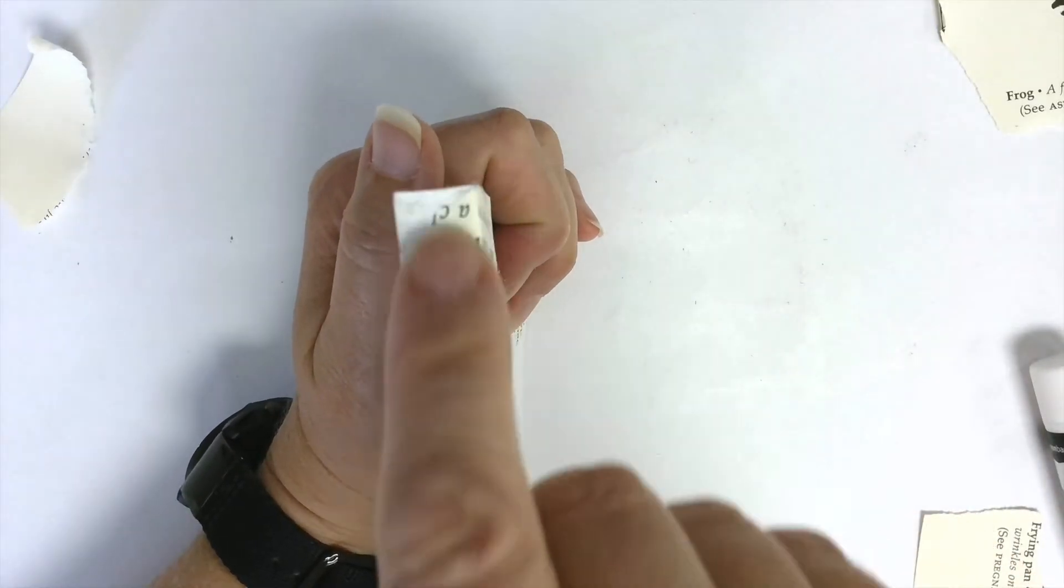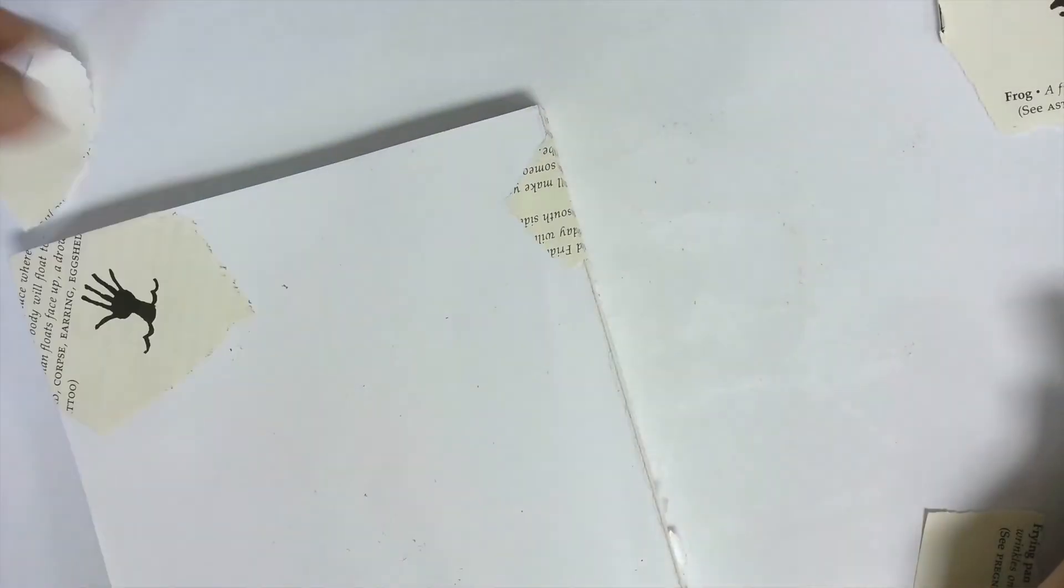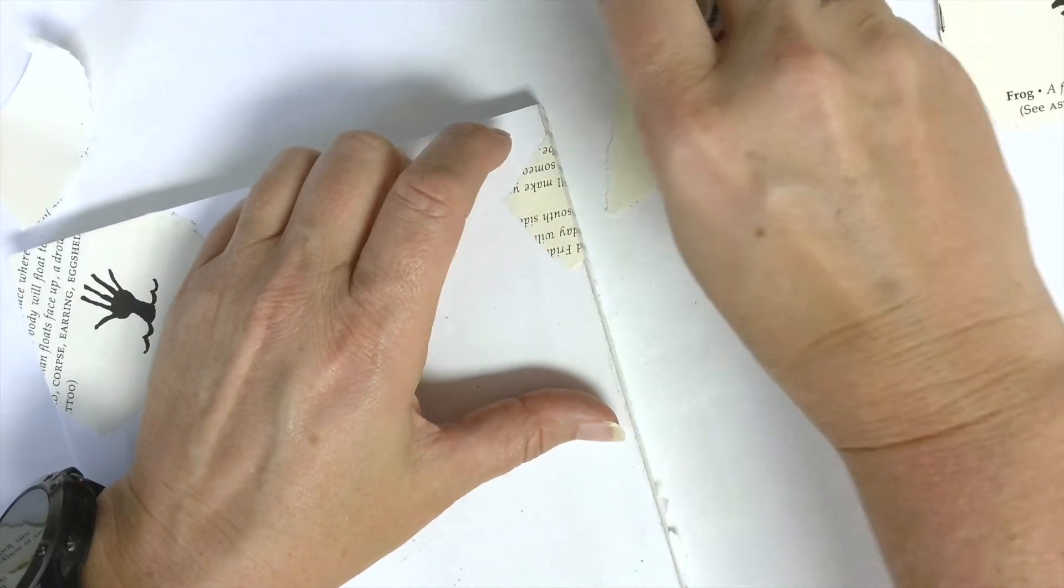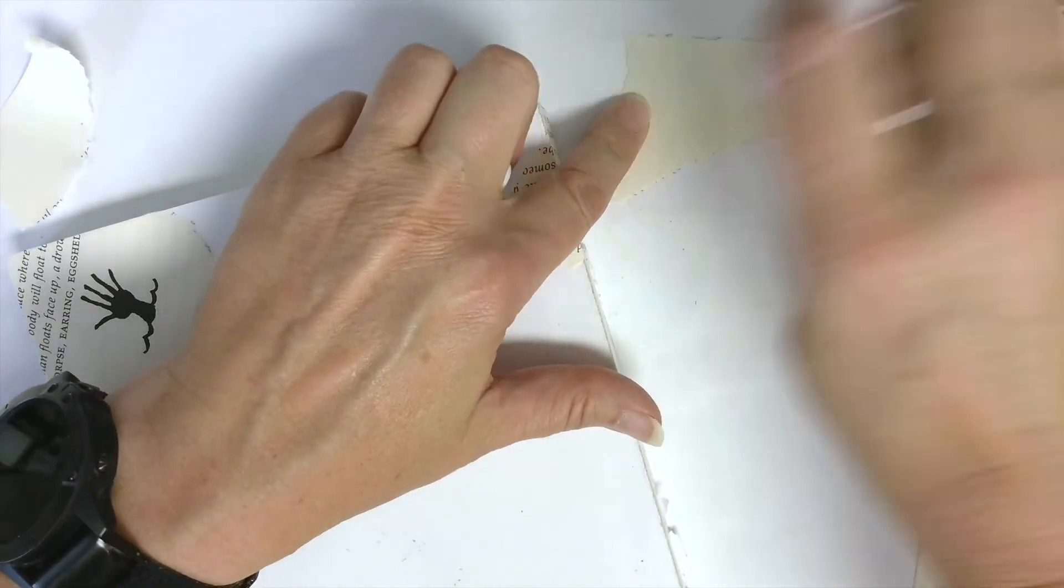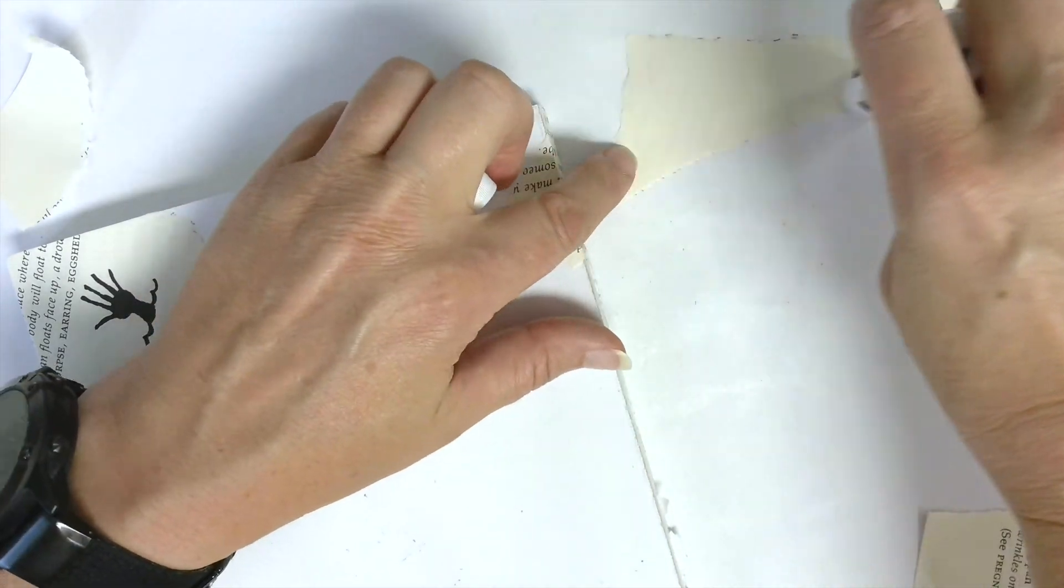So we're going to do it the same way the other way, and then we're probably going to have to put a little piece in there as well. In the future, I might put a little flat piece on there first just to cover up that, and then do my two 45s.